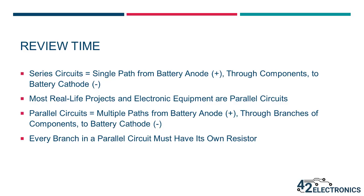First, series circuits are the simple circuits you built back in Lesson A2. They consist of a single path from the positive charge of the battery, known as the battery anode, through the components onto the negative charge of the battery, known as the battery's cathode.